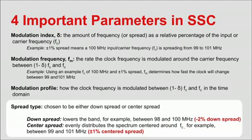Downspread is used when the system cannot run at speeds higher than the carrier frequency. For more information on TI's family of clocks and timers devices, including those with spread spectrum capability, please visit www.ti.com/clocks. Thanks for watching.